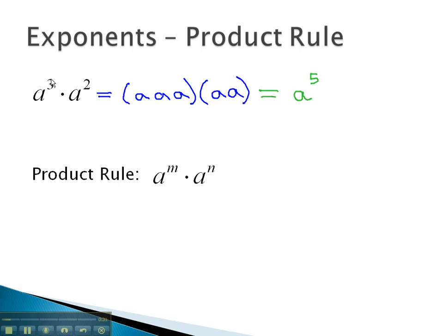This is where we get the product rule. 3 a's plus 2 a's gave us a to the 5th. This means when we have the same base, we will simply add the exponents together, m plus n, to simplify into one factor. This is the product rule. We add exponents on the common factors.